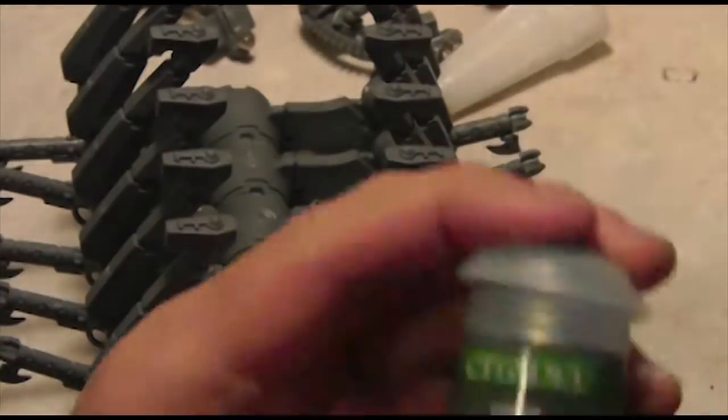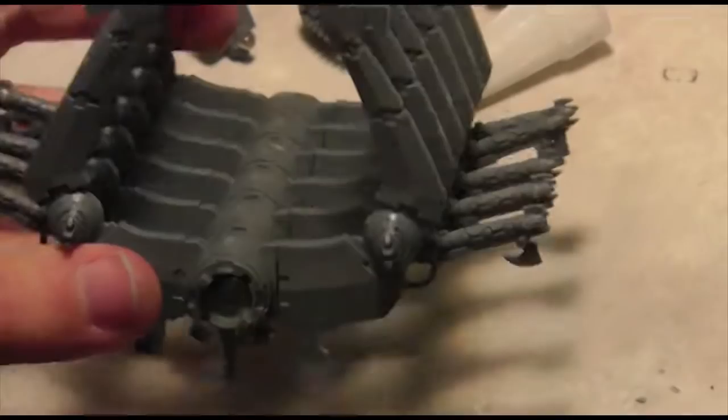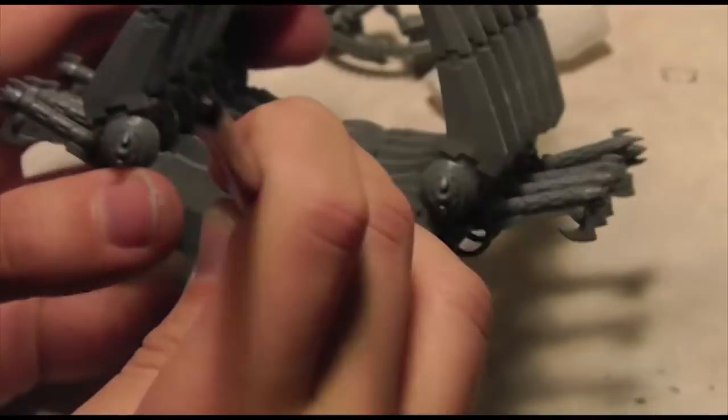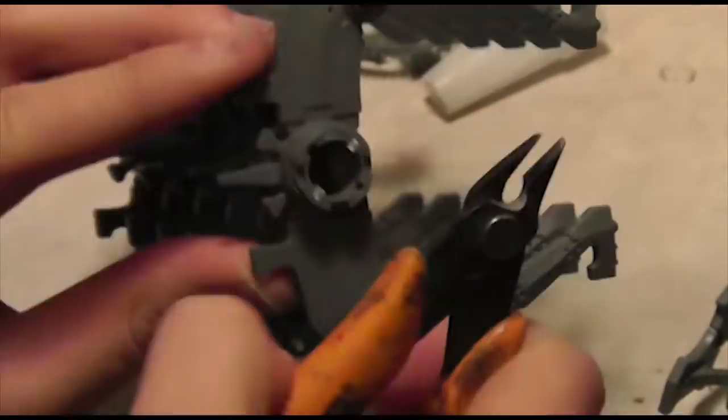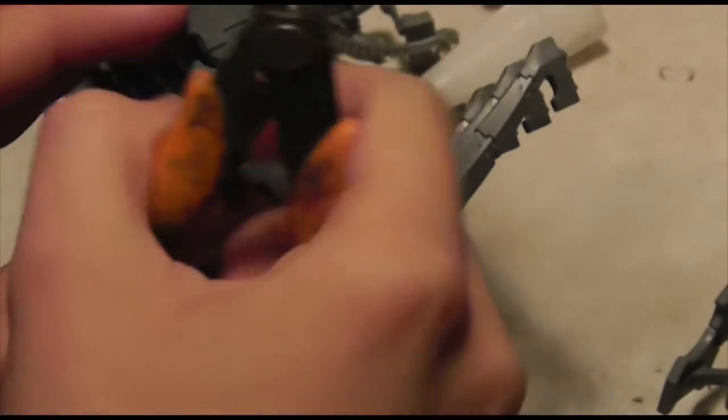I use liquid green stuff just to see how it works, and to help secure the magnet into the putty. I cut off the pegs on the opposite side to help signify which direction the rib cage should be connected.